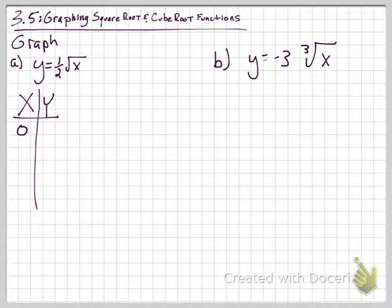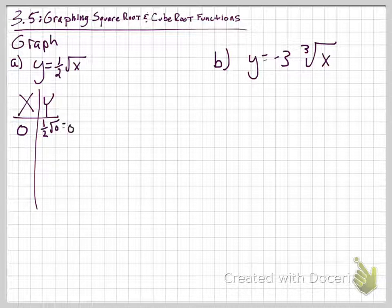If we take one half of the square root of 0, we're just going to get 0. So when we graph this, let's put a little graph together here.